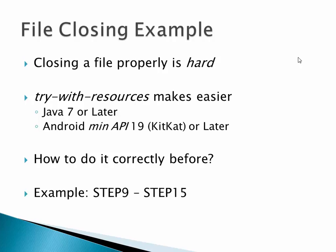A lot of people still target Jelly Bean or Ice Cream Sandwich as their minimum Android version, so you can't use try-with-resources there. There's an app I'm working on where just two days ago I tried to switch to try-with-resources and got: 'you're targeting API version 18, you can't use this.' So I went back to my little template method way. Before Java 7, or in Android before API 19, you can use a template method for file closing — there's a really nice structure for it.